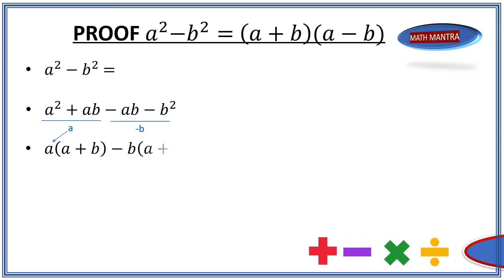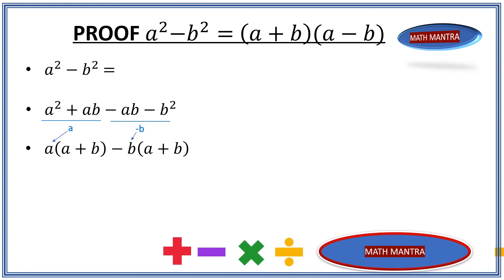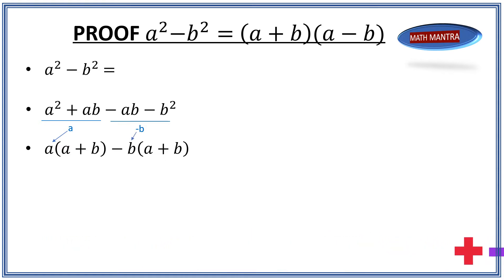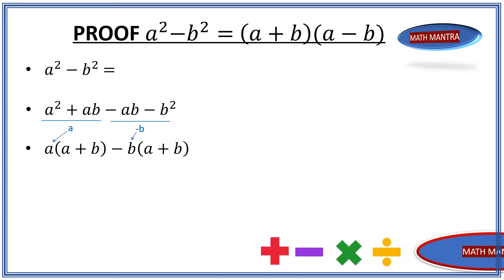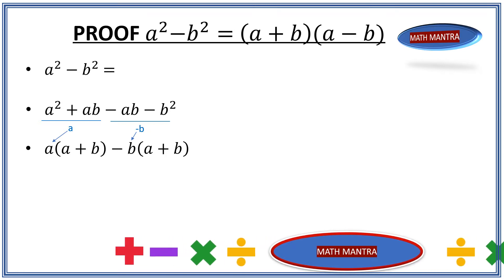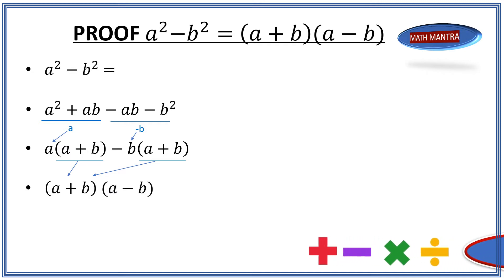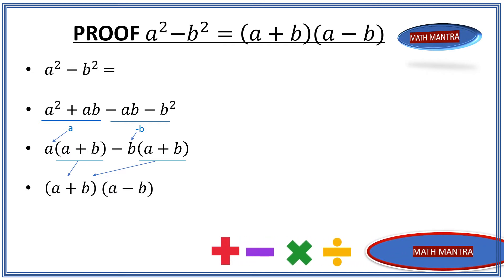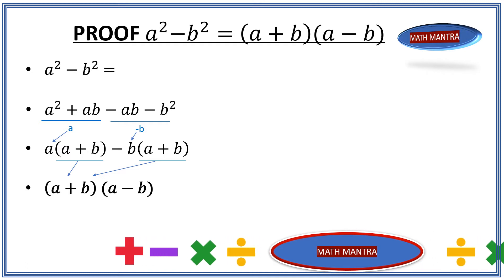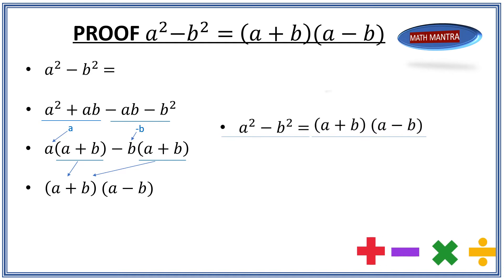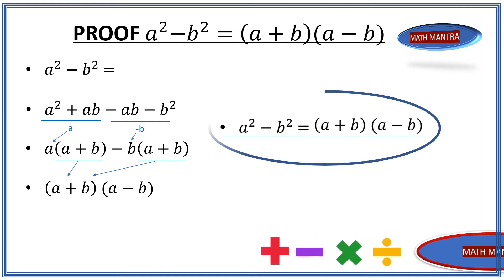In the second bracket, after we take out negative b, we also get a plus b — because we take out not just one b but also the negative sign. So then we take a plus b common, and whatever remains outside the bracket becomes another bracket: a minus b. It's pretty simple to prove a squared minus b squared equals a plus b times a minus b.